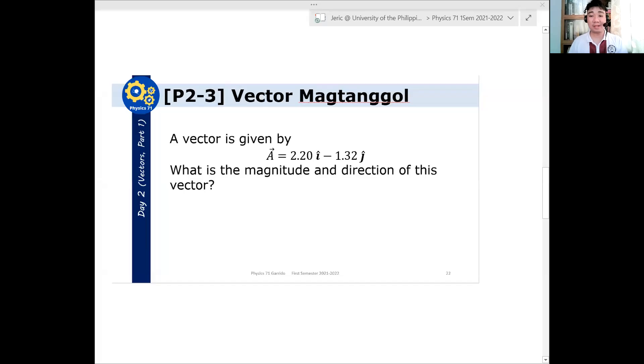Okay, please solve this problem, vector magtanggol. A vector is given by A = 2.20i hat minus 1.32j hat. What is the magnitude and direction of this vector? So I'll be giving you maybe two minutes to solve this, and we'll explain the solution after.